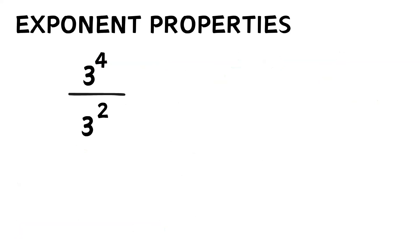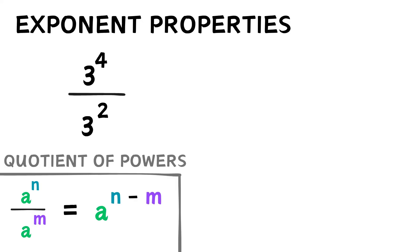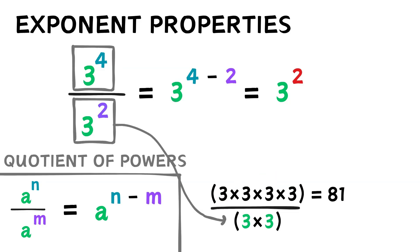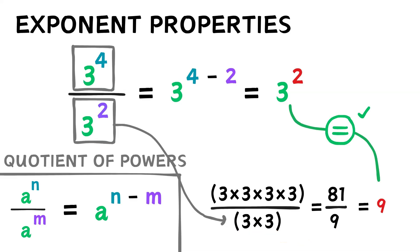If we divide 3 to the power of 4 by 3 to the power of 2, the quotient of powers property tells us we should end up with 3 to the power of 2. 3 to the power of 4 is 81, and 3 squared is 9. 81 divided by 9 is 9, which is 3 to the power of 2 — so this worked as well.